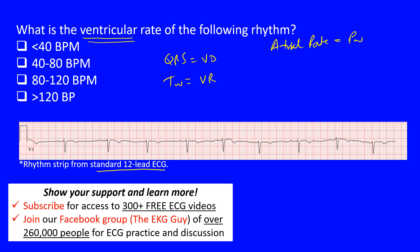Here we have a regular rhythm. Regularity means that when we look at these waves, they have the same interval throughout. We can look at the S waves, which are deep here. The S-to-S interval — or similarly the R-to-R interval — can be used; the S waves are clearest to make out. The S-to-S intervals are the same, confirming a regular rhythm.